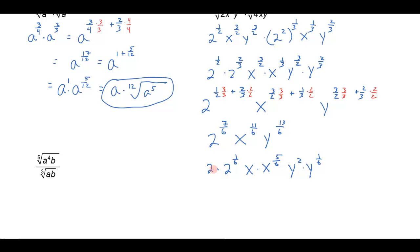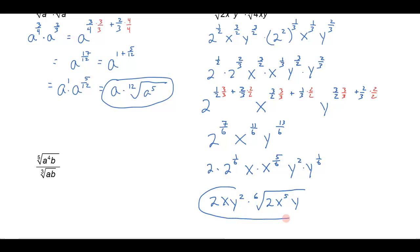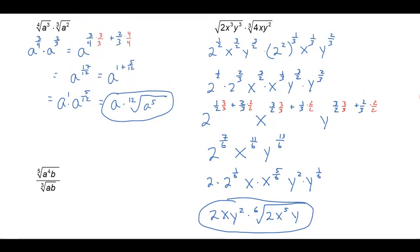So then I can write my final answer. I'm going to have a 2, an x, and a y squared out front, and then all of these remaining parts give me the sixth root of 2 to the first power times x to the fifth power times y to the first power. That's how I'd simplify that problem.